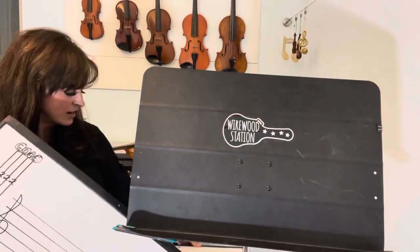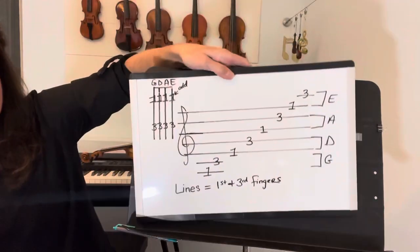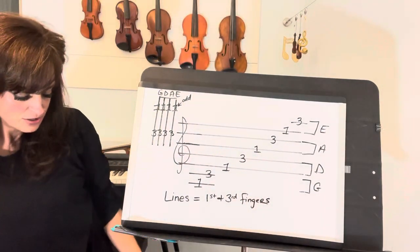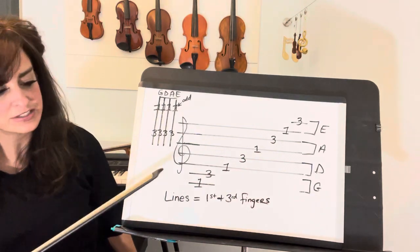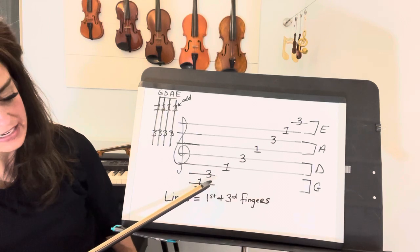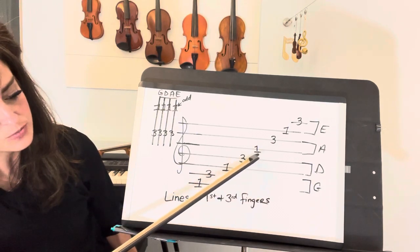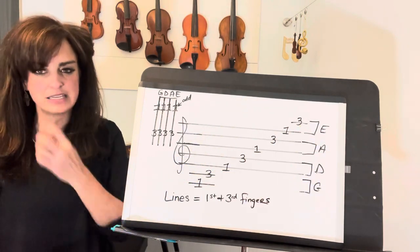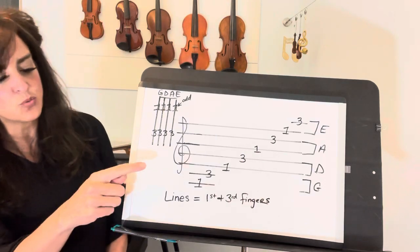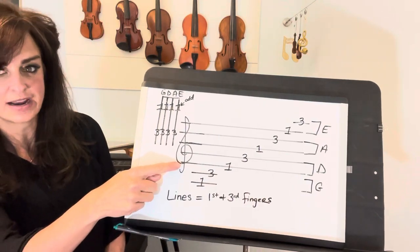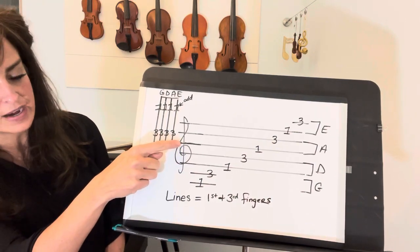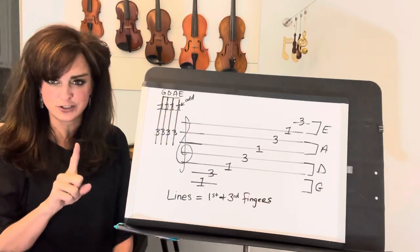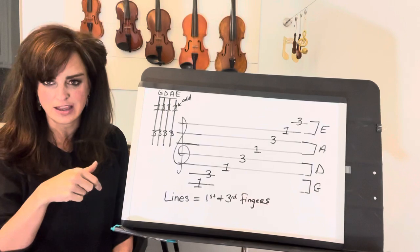Now, ones and threes on our staff are going to be on the lines. You have one and three on G line, one and three on D, one and three on A, one and three on E. It's really easy to figure out what the one is - the bottom line is one on D, the middle line of the staff is one on A, and the top line is one on E. If you can find the first finger, you can find all the other fingers on that string.